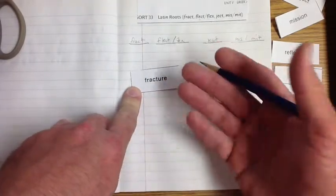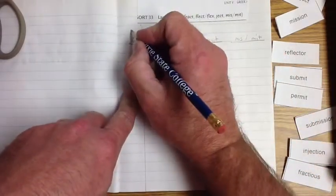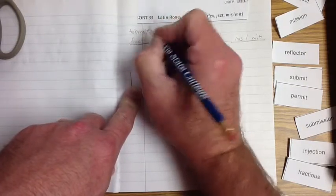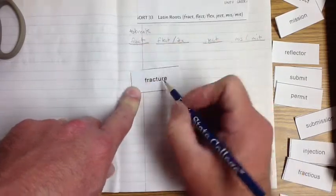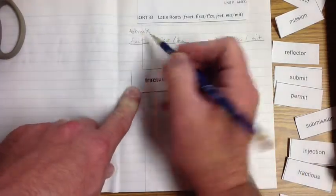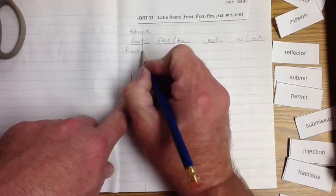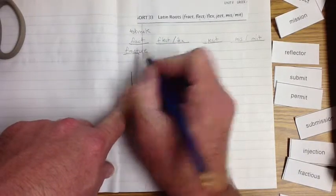It is almost a broken arm, right? So we're going to call this to break. So when you fracture something, it is breaking something. Fracture, we're going to underline that. Interesting.